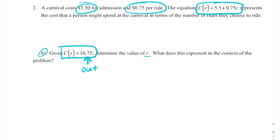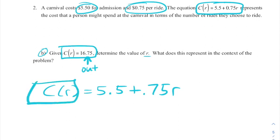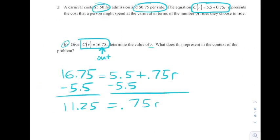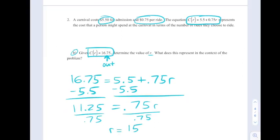So what we're going to do is we're going to rewrite this function. C of R equals 5.5 plus .75 R. And we're going to replace C of R with the output that we want, which would be 16.75. And now we can just solve for R. Subtract 5.5, divide by .75, and get 15.